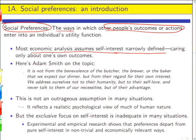Here's Adam Smith. The classic statement of self-interest. It is not from the benevolence of the butcher, the brewer, or the baker that we expect our dinner, but from their regard for their own interest. We address ourselves not to their humanity, but to their self-love. And never talk to them of our necessities, but of their advantage. Which is another way of saying, markets rule. Not an outrageous assumption in many situations. It's clearly a realistic psychological view of a lot of human behavior. But it's not enough. And there's lots and lots of economically important situations in which if we don't understand how people feel about other people's outcomes and other people's actions, we will predict the wrong thing and potentially impose the wrong public policy.